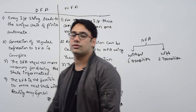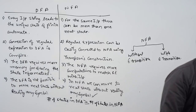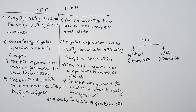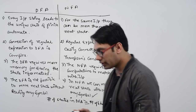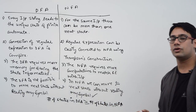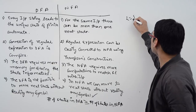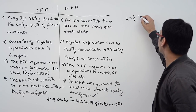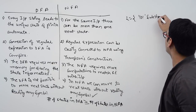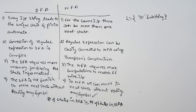Let us take a few more examples of NFA and how to convert those NFAs to DFAs. Let us take one more example: assume we are drawing an NFA which should accept strings containing 101 as a substring.